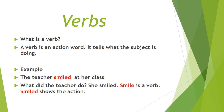So what is a verb? A verb is an action word. It tells what the subject is doing, or what the noun is doing. Example: the teacher smiled at her class. What did the teacher do? She smiled. Smile is a verb — it shows the action.